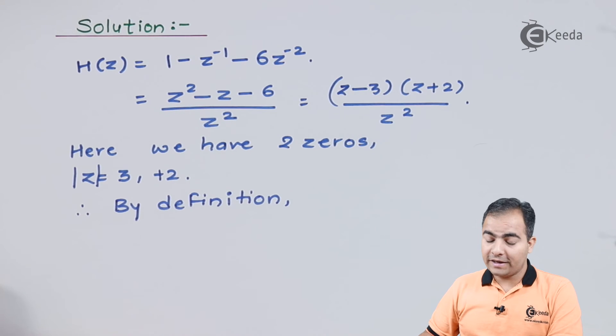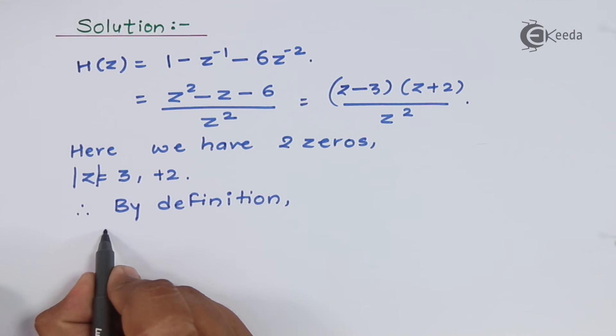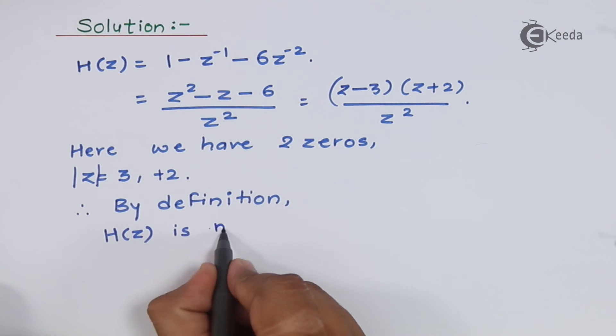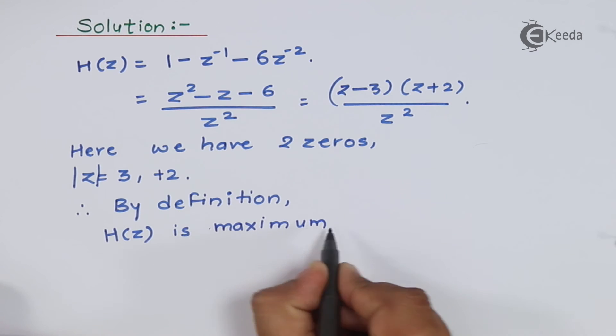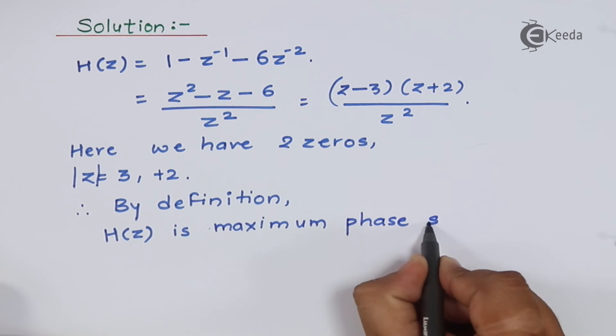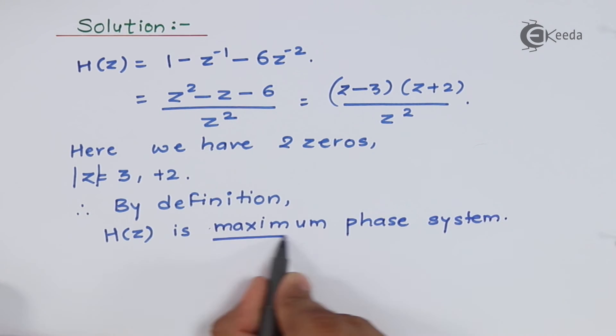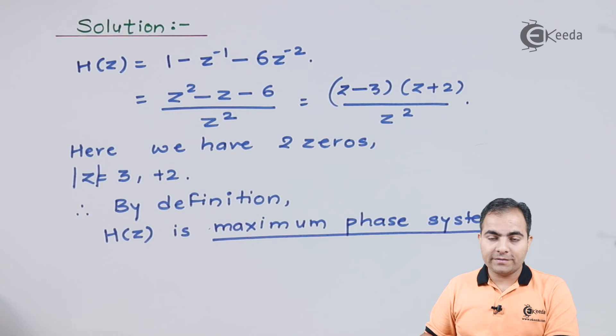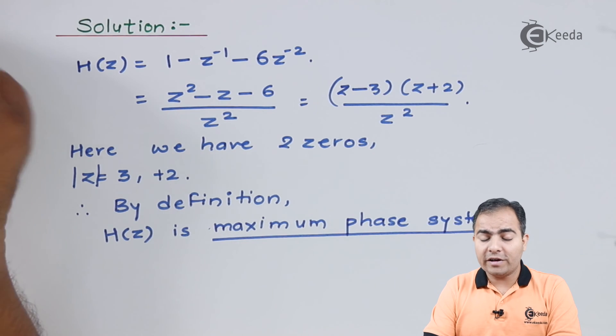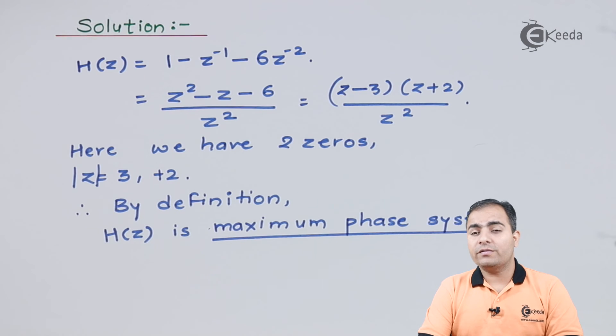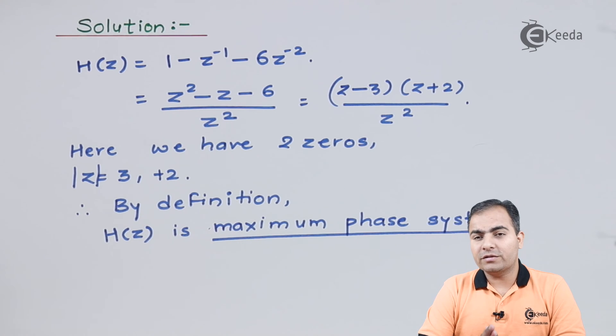By definition, H(z) is a maximum phase system. Similarly, we'll solve the numerical for mixed phase system. What will be the question and how to find the solution I will tell you in the next video. Stay tuned to Keeda and subscribe for further videos. Thank you so much.